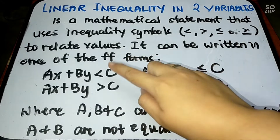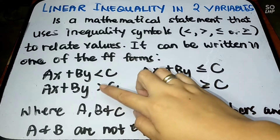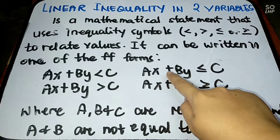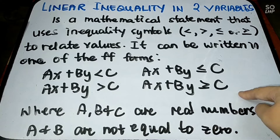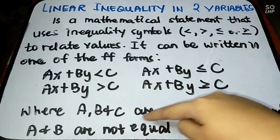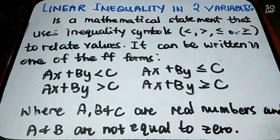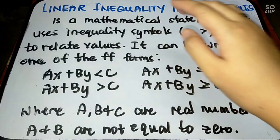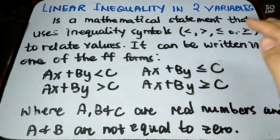It can be written in one of the following forms: ax plus by less than c, ax plus by greater than c, ax plus by less than or equal to c, or ax plus by greater than or equal to c, where a, b, and c are real numbers and a and b are not equal to zero. So, it is similar to a linear equation in two variables — the only difference is that in a linear equation we use an equal sign, while in a linear inequality we use inequality symbols.